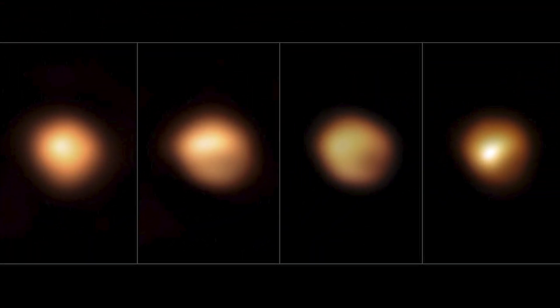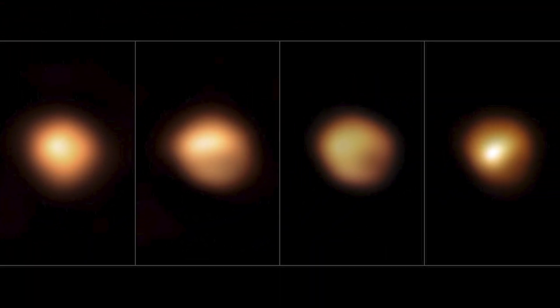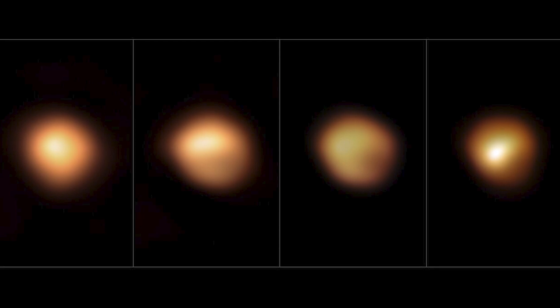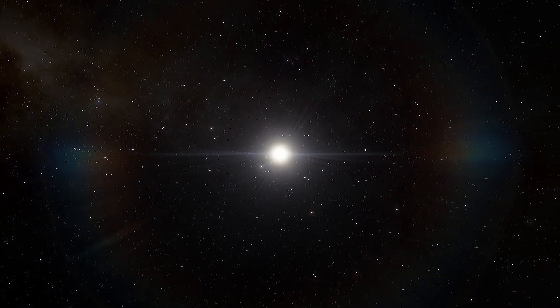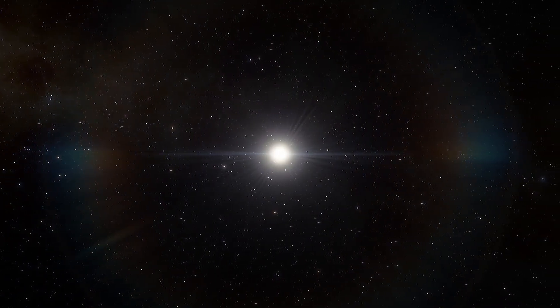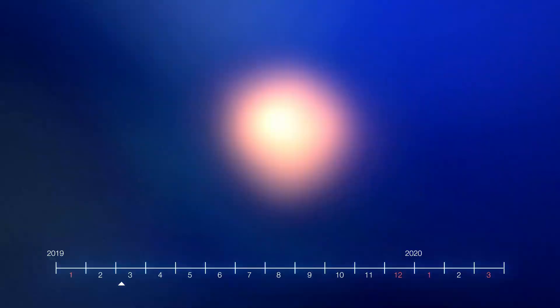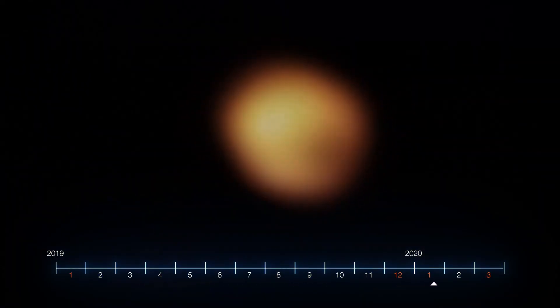The phenomenon, which unfolded over the latter part of 2019 into 2020, led to Betelgeuse becoming significantly fainter than usual, prompting theories about its imminent demise through a supernova explosion. However, the star later began to regain its brightness, adding to the intrigue.